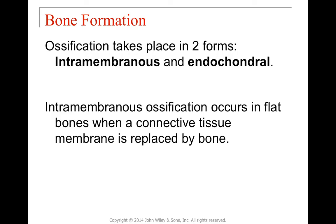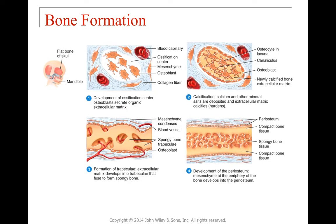There are two major forms of ossification. Intramembranous ossification occurs inside a connective tissue membrane that is replaced by bone — as in flat bones. A region that was a connective membrane is replaced by bone tissue, reducing motion slightly but increasing support. During intramembranous ossification, first an ossification center forms, surrounded by mesenchymal cells. Inside, osteoblasts secrete the extracellular matrix. The second step is calcification — calcium and mineral salts are deposited into the matrix, causing it to harden.